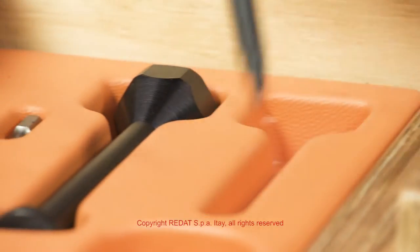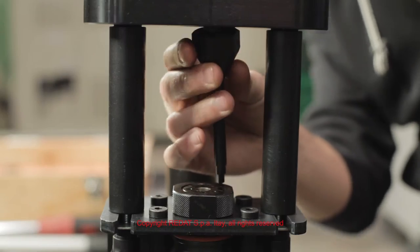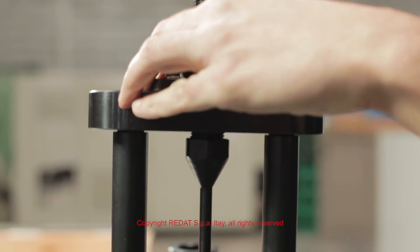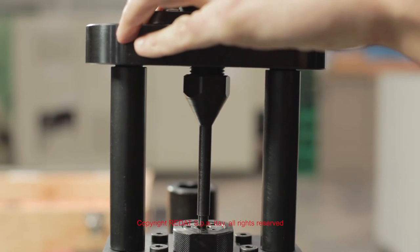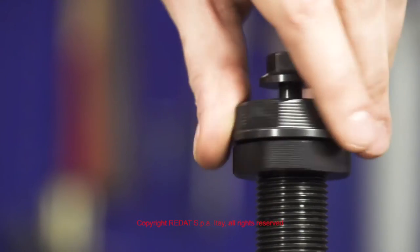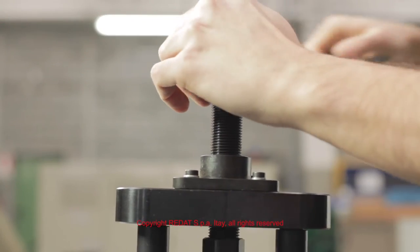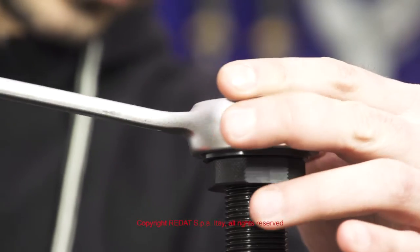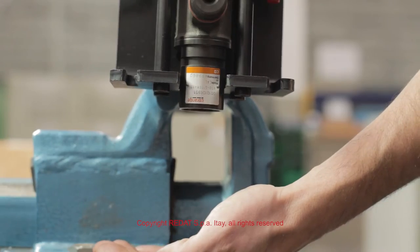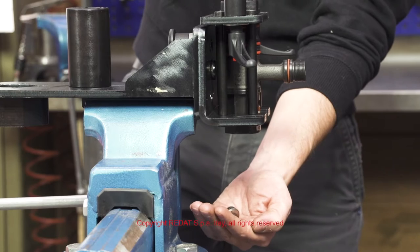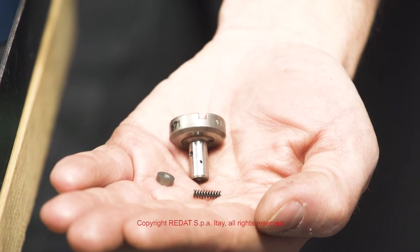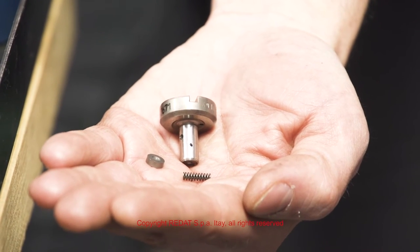We remove the extraction pin we used before from the detachable part and place the other tool in its place. We proceed to the extraction of the plunger and the valve using the 36 wrench. We pay attention not to lose the spring and shim placed between the valve and the plunger.